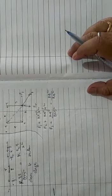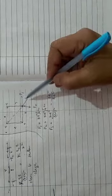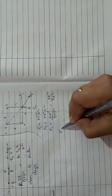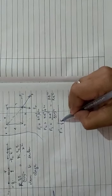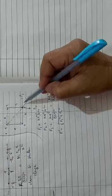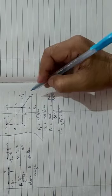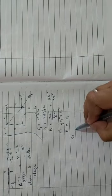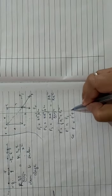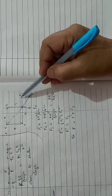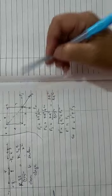You add all three forces vectorially. F1 and F2 are perpendicular and equal, so first calculate their resultant using Pythagoras: F dash equals square root of F1 squared plus F2 squared. Since F1 equals F2, their resultant F dash is directed along the diagonal, which is the same direction as F3. So the total resultant force F equals F dash plus F3.